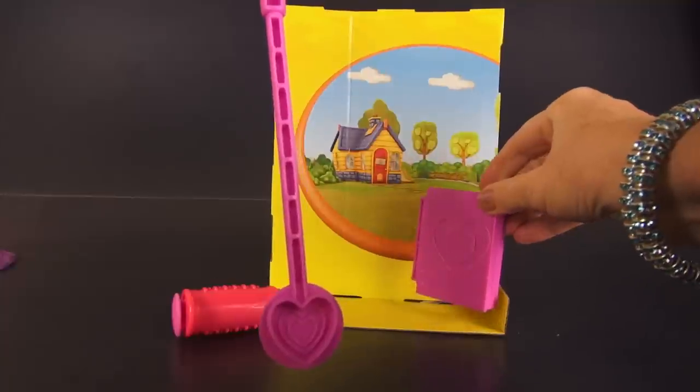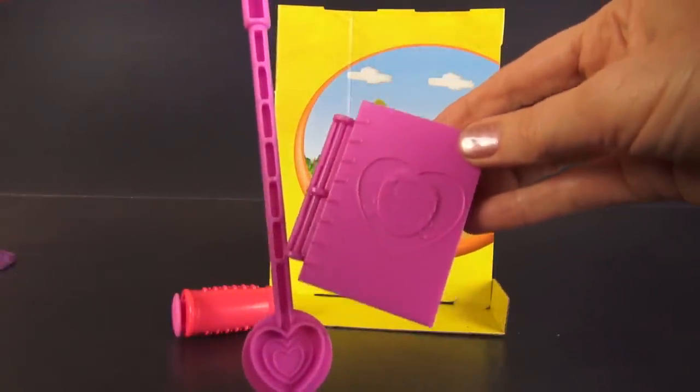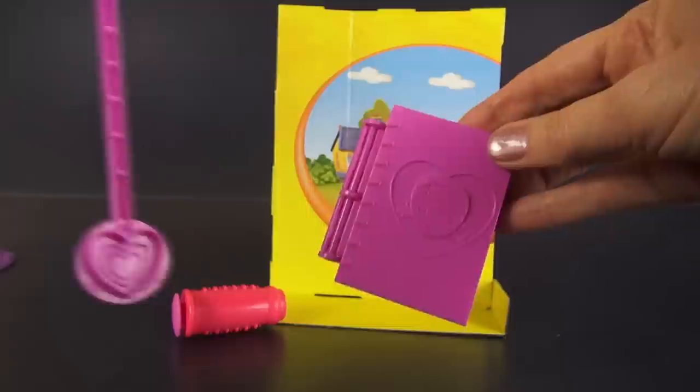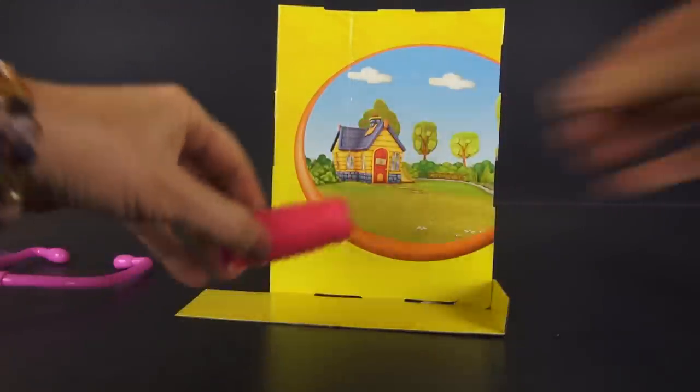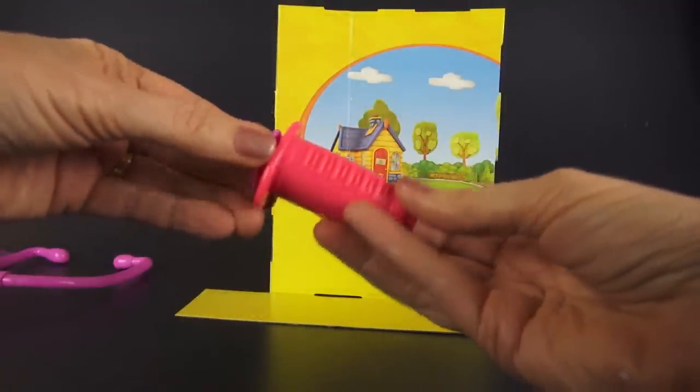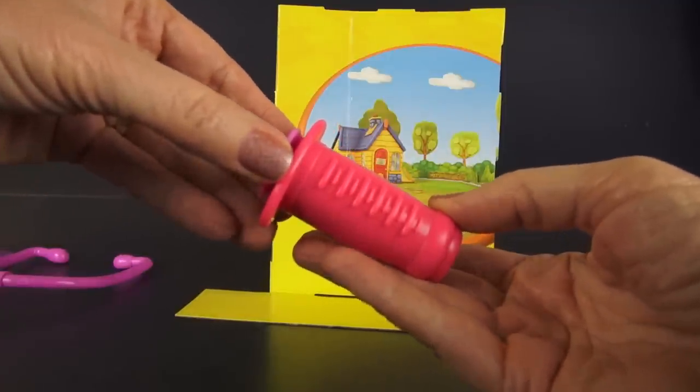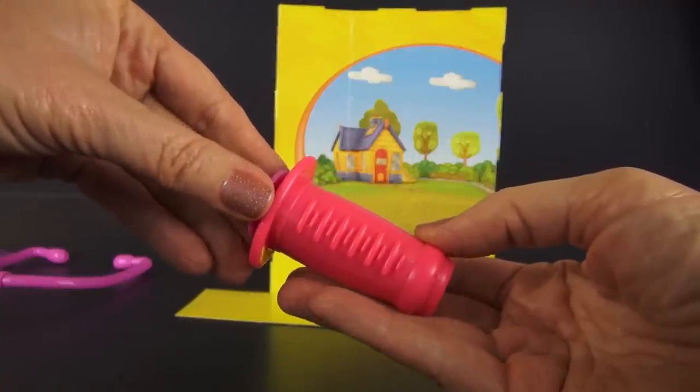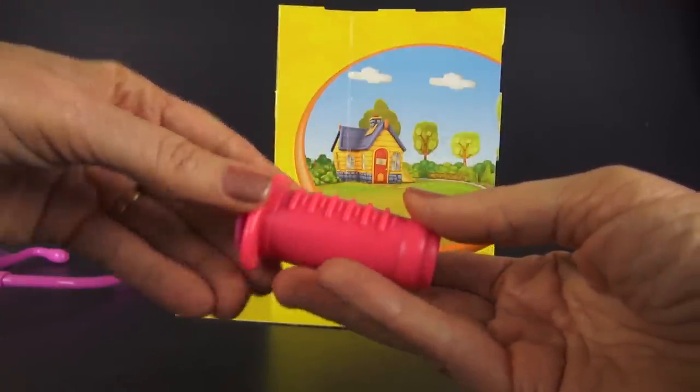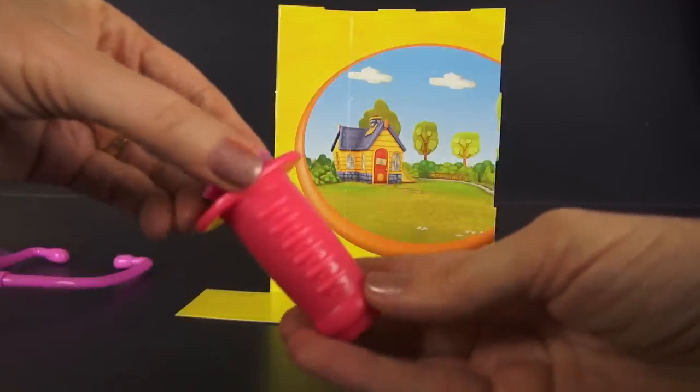There's hearts all over the place, because here we have a heart on the Big Book of Boo-Boos. And this is what Play-Doh calls it, an extruder, but what's that remind you of? If you were at the doctor's office, would that remind you of something that they give shots?